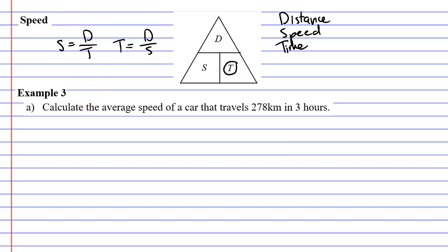Lastly, what about the formula for finding distance? If I'm trying to find distance, you'll notice that this time, speed is next to time. So we write that as speed times time.